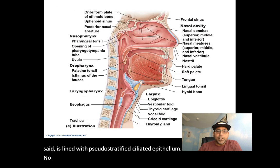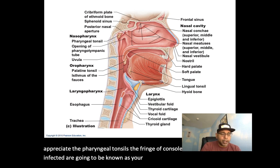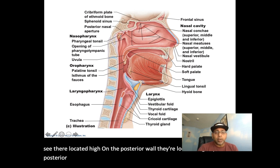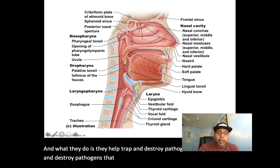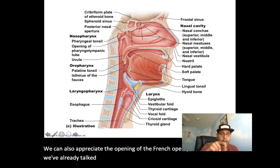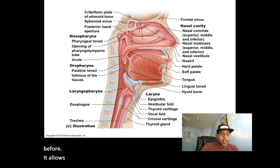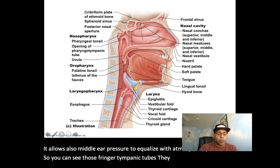We can also appreciate the opening of the pharyngeal tympanic tube, which allows us to drain the middle ear and allows middle ear pressure to equalize with atmospheric pressure. These pharyngeal tympanic tubes open into the lateral walls of the nasal pharynx.